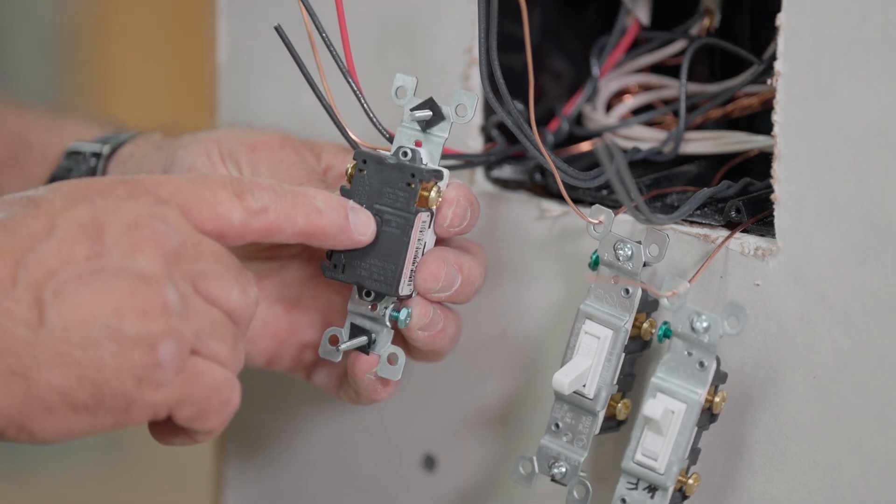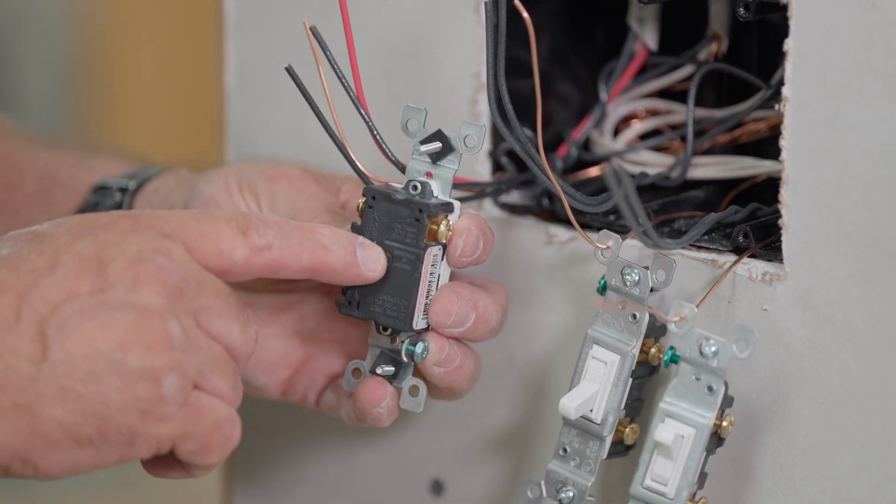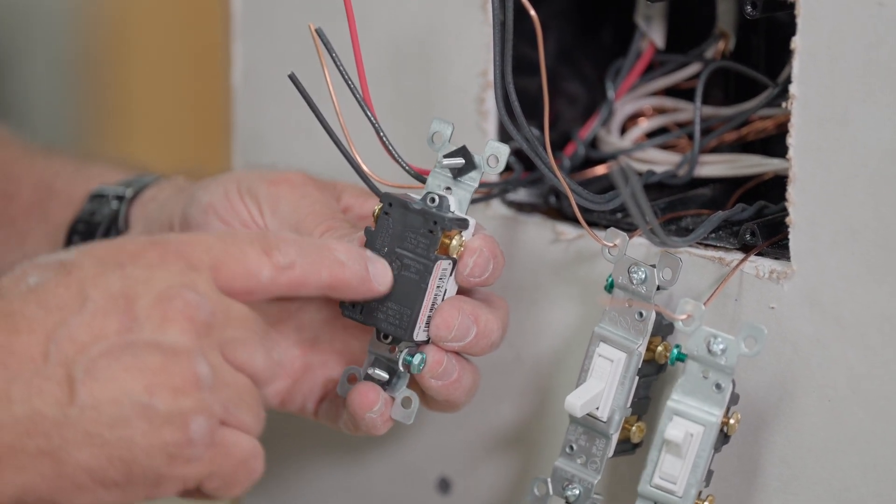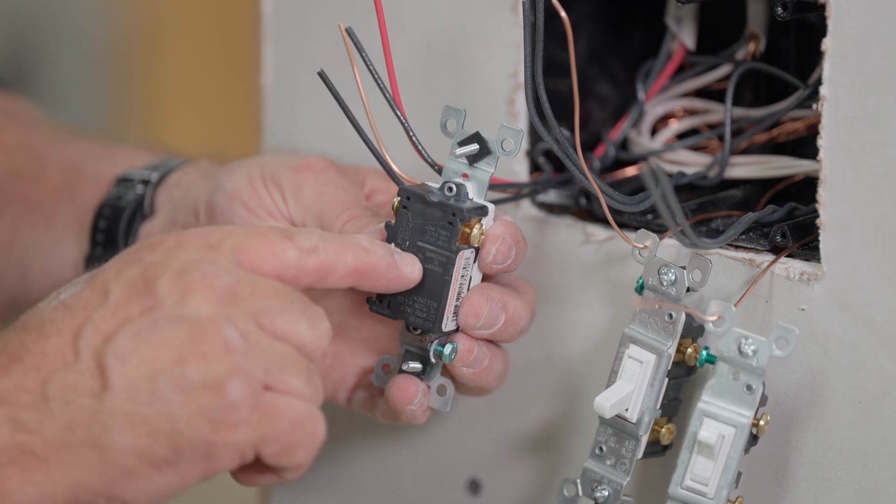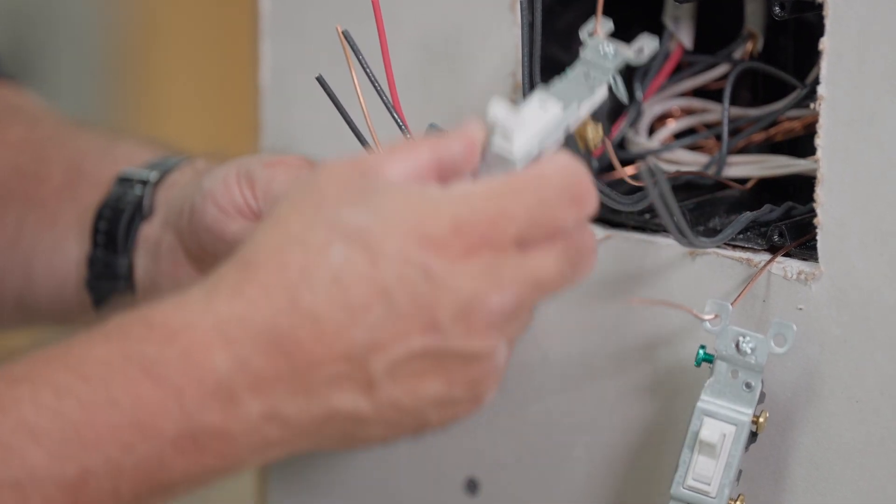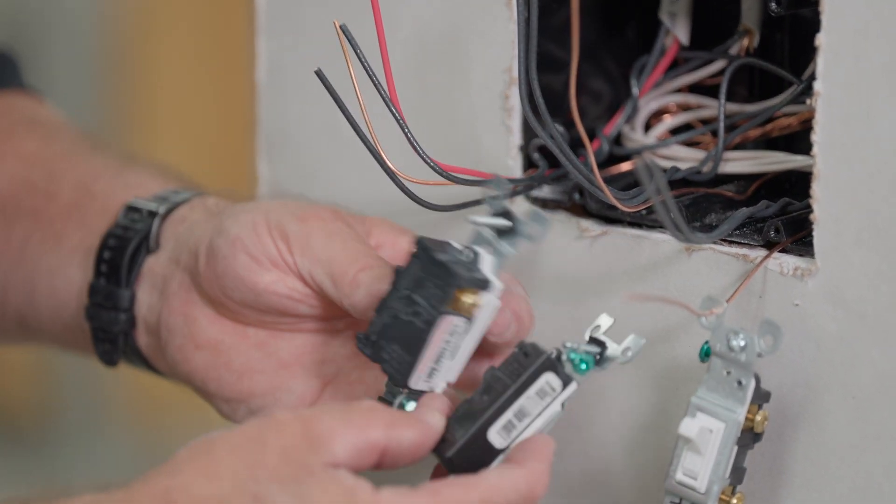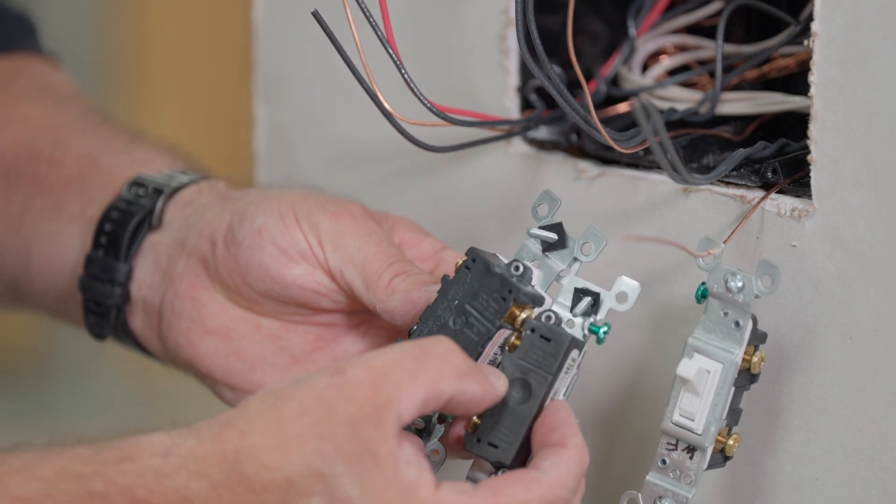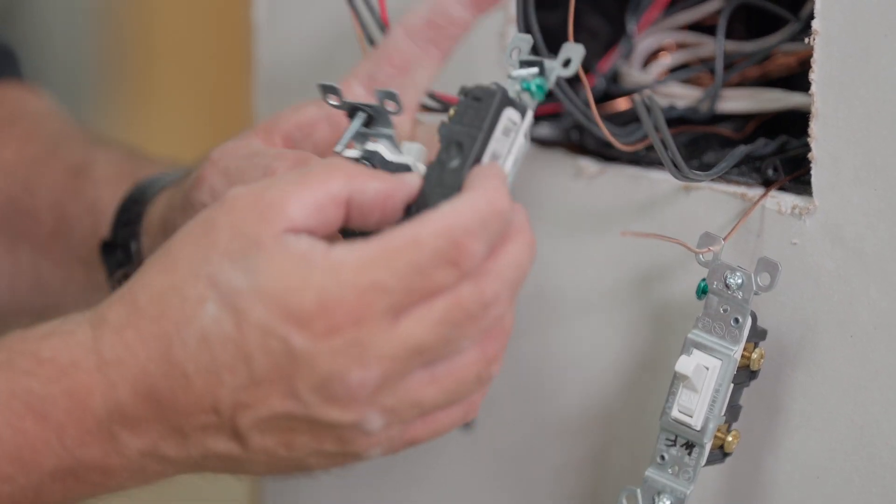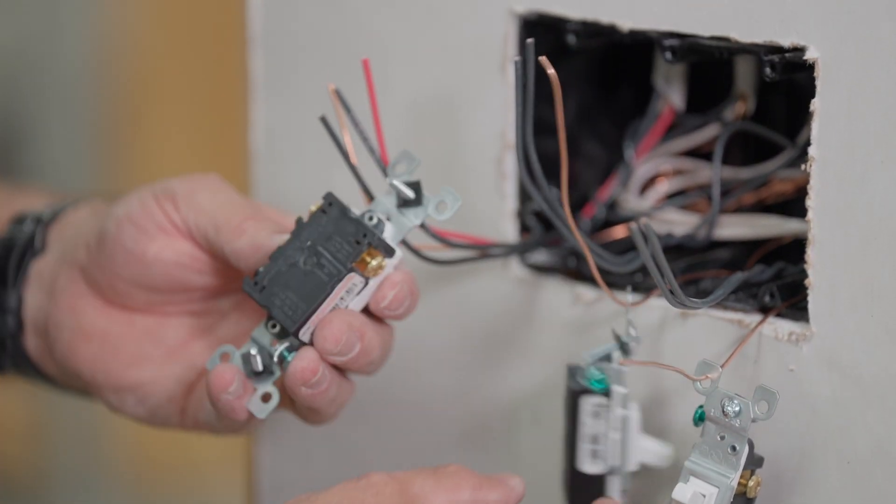Now on these stab-ins, there's always a guide in the back of a switch to show how far you strip the wire. In this case, it's right here in the back of this switch. This switch also has the same thing and they're about the same length. The little guide for showing how far to strip the conductor.